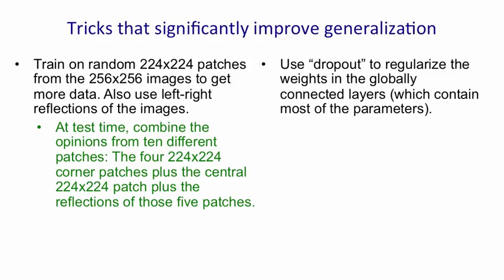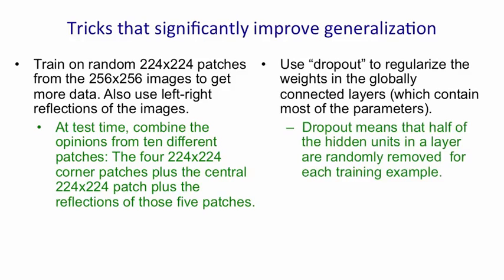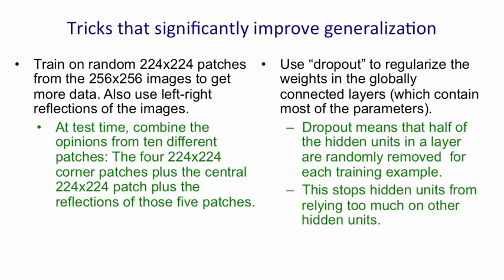In the top layers, where most of the parameters are, he uses a new regularization technique called dropout, which is very effective at stopping the network from overfitting — worth several percent in his results. The basic idea of dropout is that each time you present a training example, you omit half the hidden units from a layer. The surviving units can't rely on their comrades being present, so they can't learn to fix up errors left by other units that might not be there. They have to become more individualist and do useful things independently, stopping too much cooperation between hidden units. Cooperation is great for fitting training data, but if the test distribution differs, it causes overfitting.